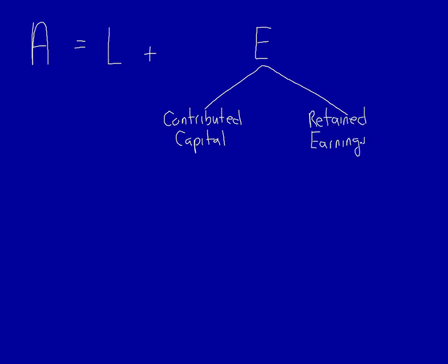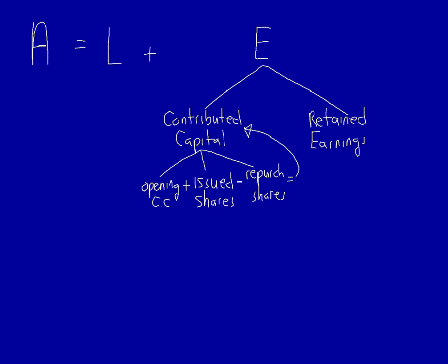Contributed capital, also called owner's capital, is made up of three things: opening contributed capital from prior periods, plus issued shares from the current period, minus repurchased shares from the current period. These three together are equal to the current balance in contributed capital.